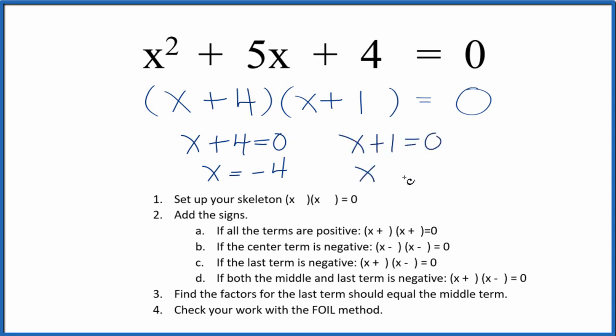If you put negative four in for x here and you did the math, you'd end up with zero here. Likewise, if you put negative one in for x and you do the math, this will all equal zero.